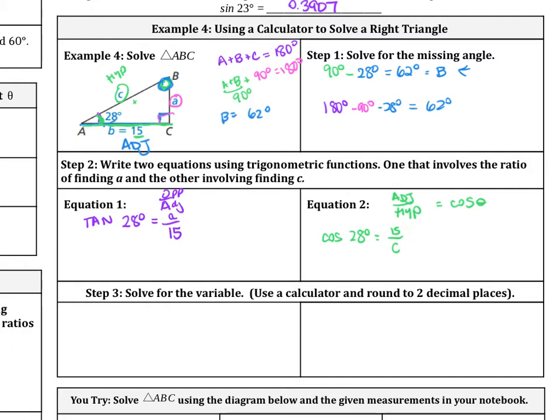Now let's solve for the variable. Let's first start with tangent of 28 degrees equals A over 15. So we want to solve for side A, so isolating the A, we need to multiply both sides by 15. So now we have A equals 15 times tangent of 28 degrees.